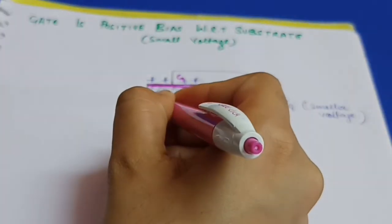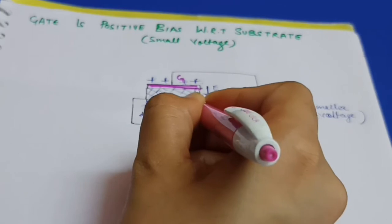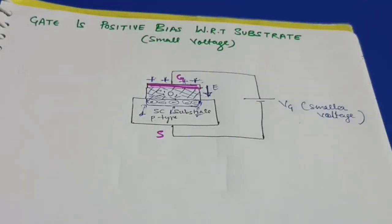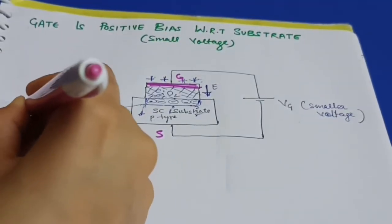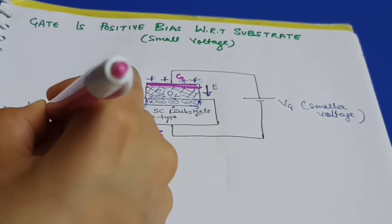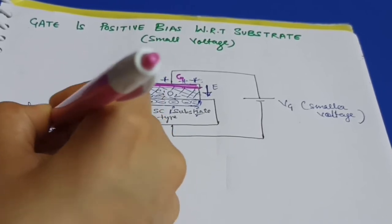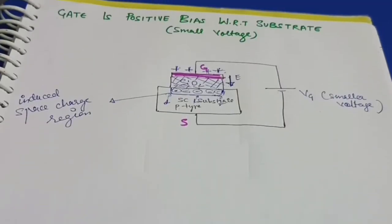As holes move away from the interface, a region of immobile negative ions is created near the interface, called the induced space charge region. This space charge region is quite similar to the space charge region in a p-n junction. The MOS capacitor is now working in depletion mode, and since no current passes through it, it is under equilibrium.